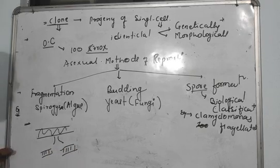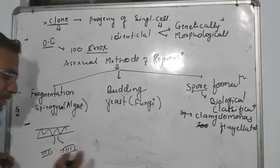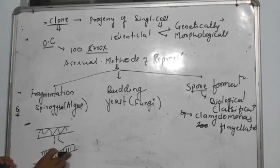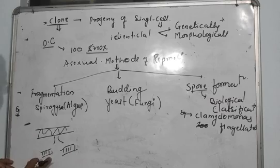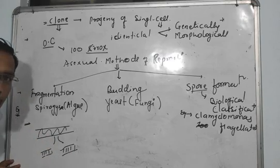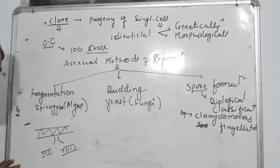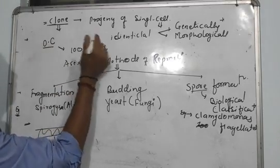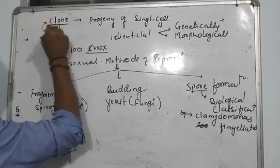Each piece becomes a new piece. Means fragmentation ke baad, it will become the new individual. In asexual reproduction, character will change? No. What will happen? Clones.